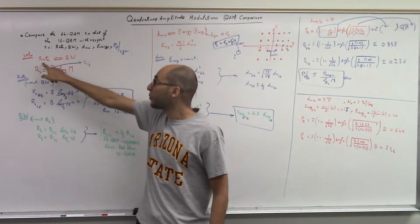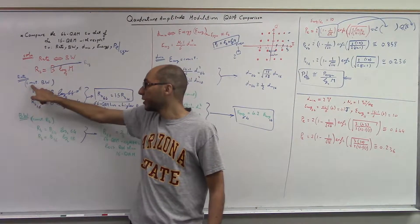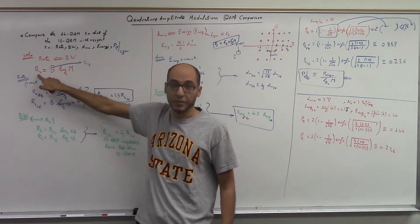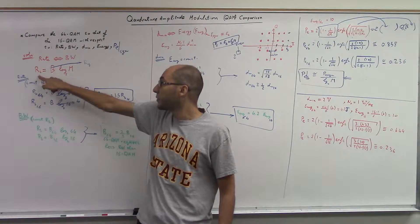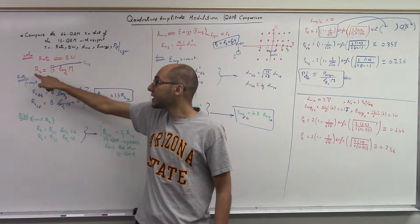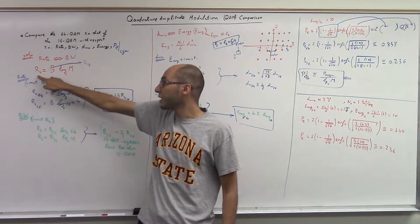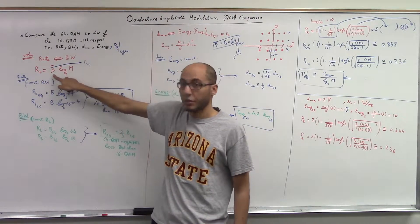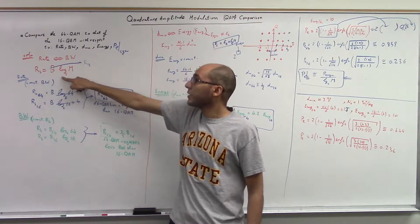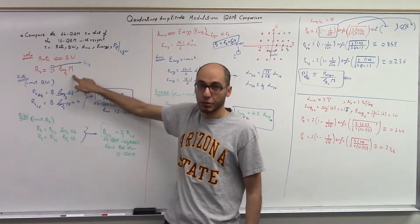When I want to compare the rate, I have to fix the bandwidth. I'm going to use the formula that relates bandwidth to rate. It's a linear formula: the bit rate in bits per second is equal to the bandwidth in Hertz multiplied by the number of bits per symbol.